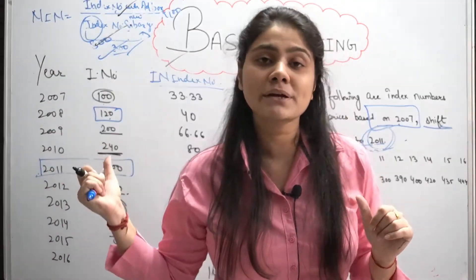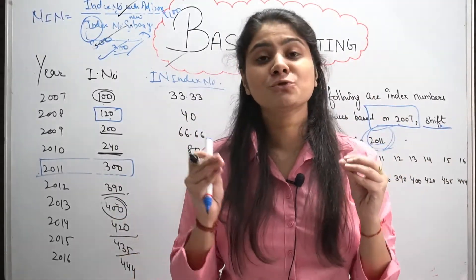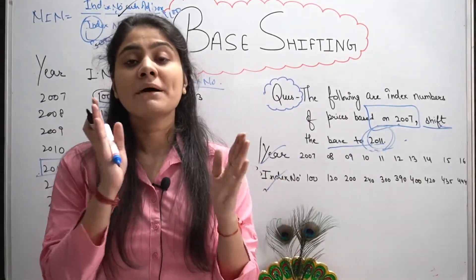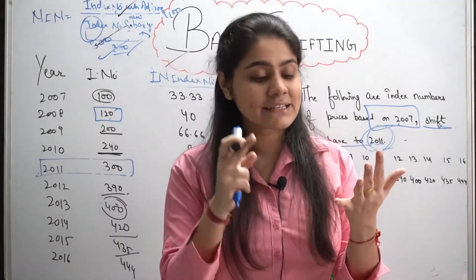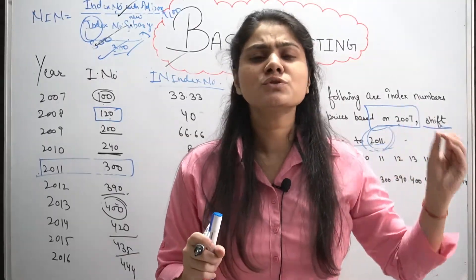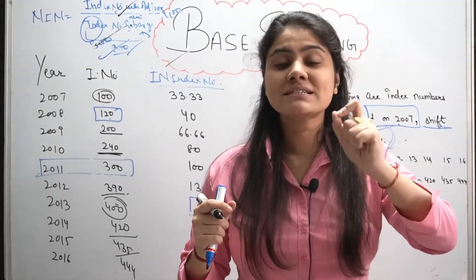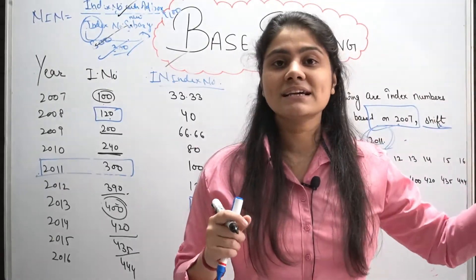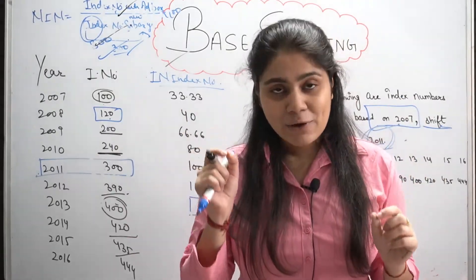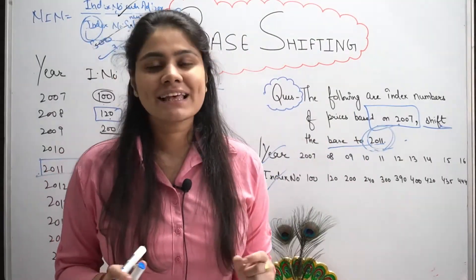Question बहुत easy था, formula mind में रहना चाहिए। Base shifting complete हो गया। Index number का chapter two to three classes में complete हो जाएगा — don't worry। Main portion complete हो चुका है। Revision start कर दो पहले वाली classes का भी। I hope you liked this video — do like, share, comment, and subscribe to my channel. Thank you so much for watching.